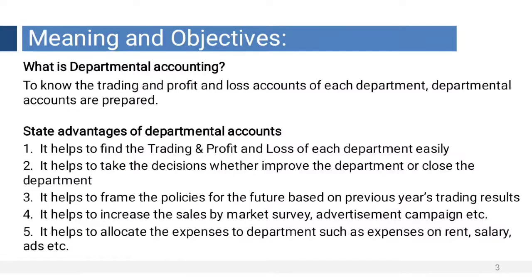Meaning and objectives of departmental accounting. Every business deals in different kinds of goods and services. In the same building, to differentiate the types of goods and services, every business unit separates its sections and divisions. Such sections or divisions are called departments — business sections or divisions are known as departments.